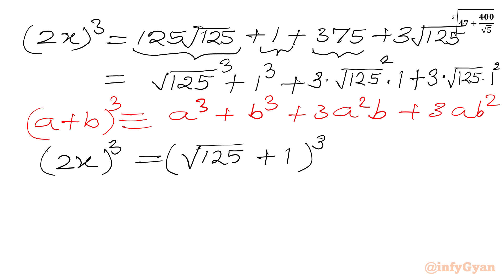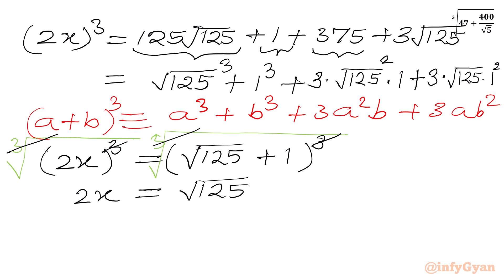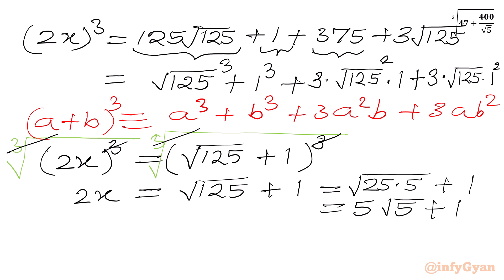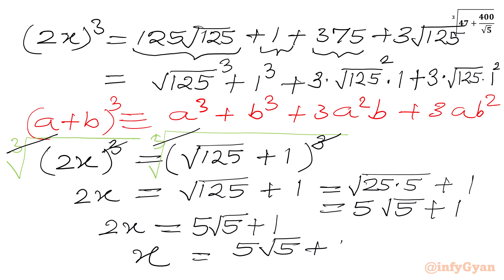Now we take the cube root of both sides. The cube root and cube cancel from both sides. So we get 2x equal to square root 125 plus 1. I can write 125 as 25 times 5, and square root of 25 is 5, so we get 5 root 5 plus 1. Therefore 2x equals 5 root 5 plus 1, and dividing both sides by 2 we get our answer: x equals 5 square root 5 plus 1 over 2.